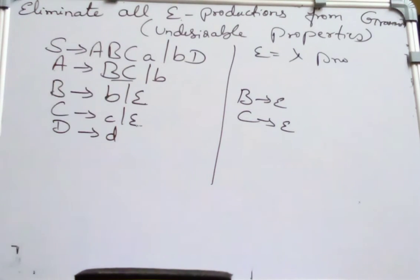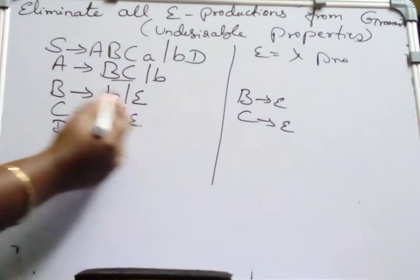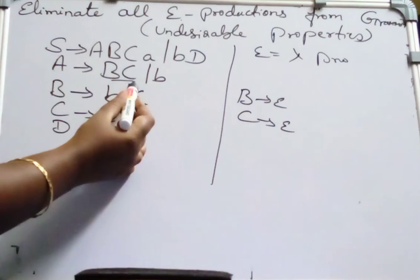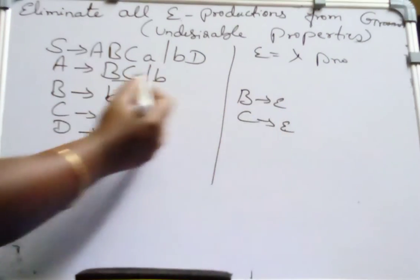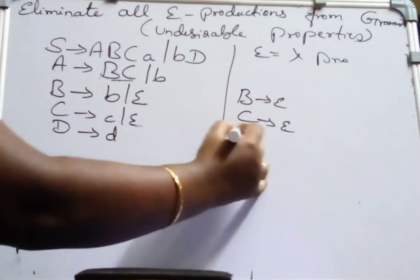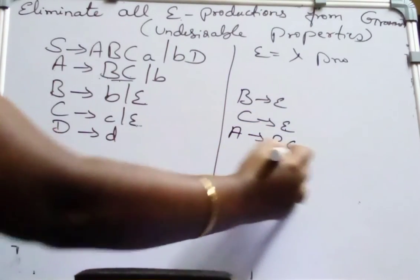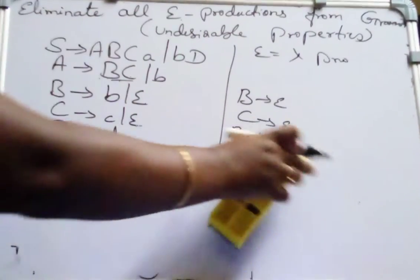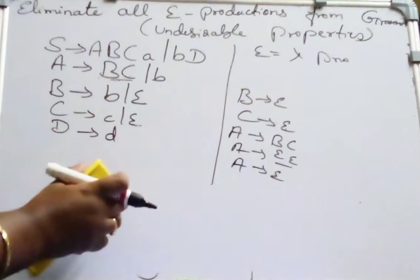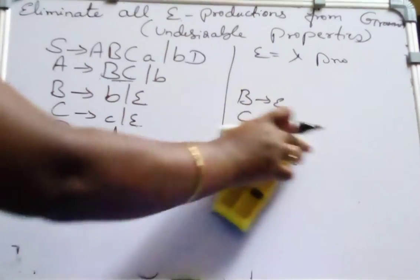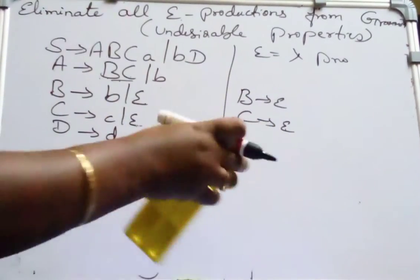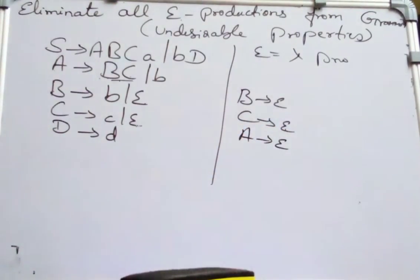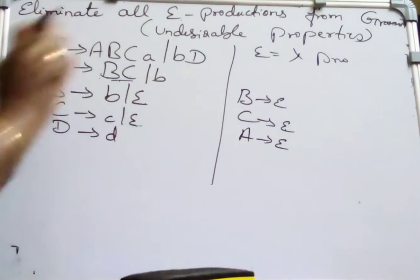First we should write all the nullable productions. The nullable productions here are B derives epsilon and C derives epsilon. A is deriving B, C. It means B and C can be substituted by epsilon. If I substitute epsilon and epsilon for A derives B, C, then it is nothing but epsilon itself. So A also derives epsilon. From this we can understand A also derives epsilon. So which are all the nullable variables? Any other nullable variables? No.